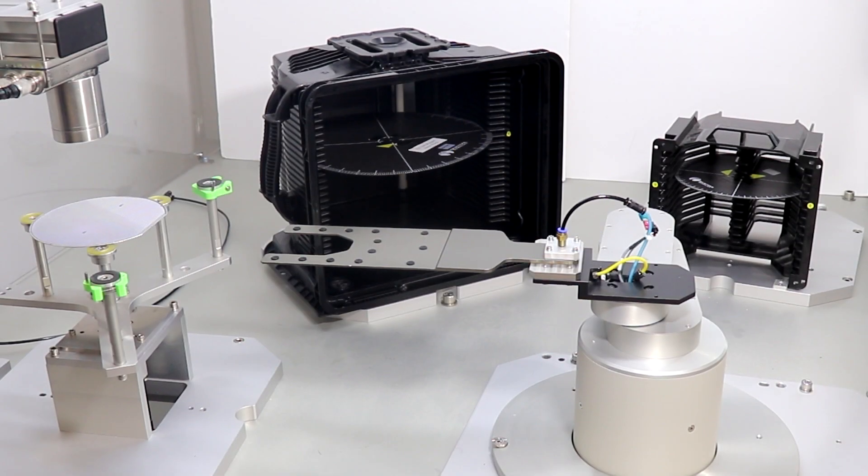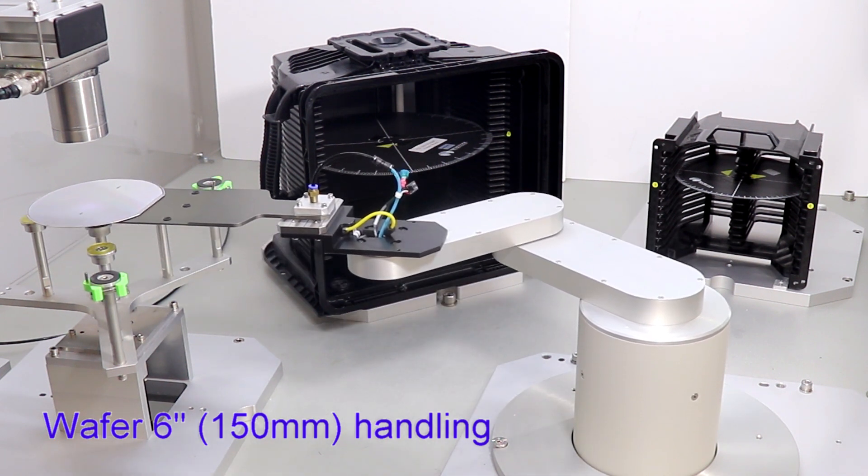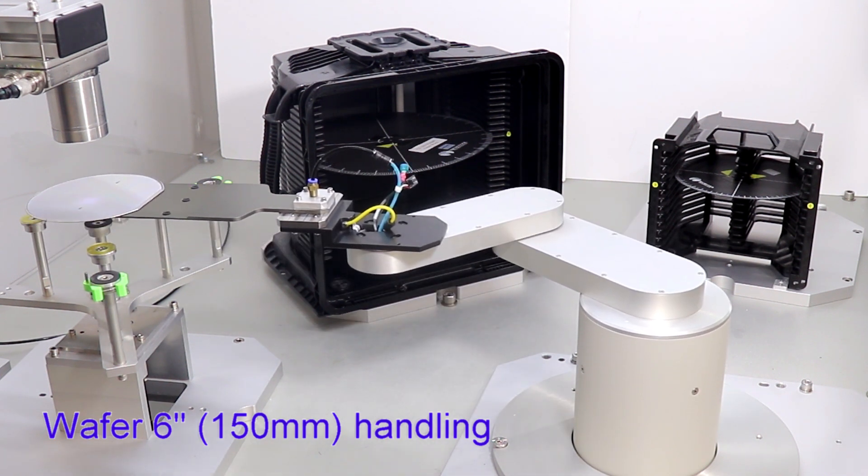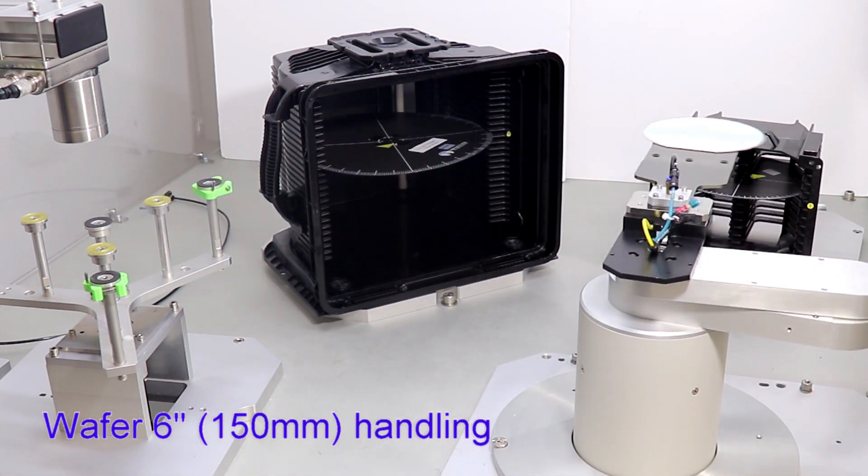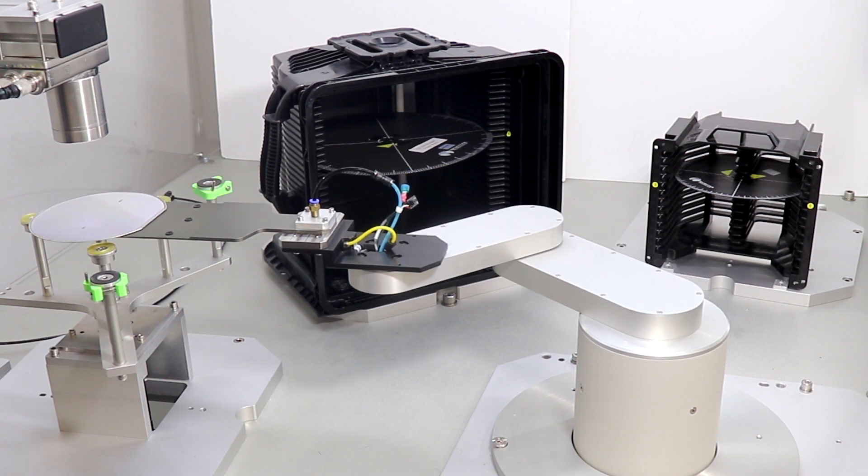CoreFlow's latest robot end-effector is designed and manufactured to handle multiple sizes of warped wafers. 6 inches, 8 inches, and 12 inches diameter wafers can now be manipulated simultaneously without any user intervention.